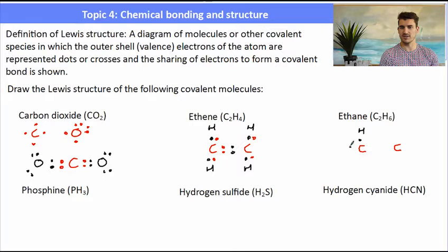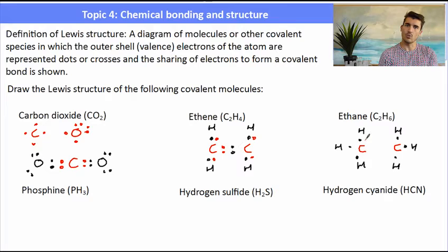Ethane, C2H6, is similar in that the two carbons are connected together, and then there are three hydrogens attached to each carbon. That leaves carbon with one electron to share with its neighbouring carbon, which gives it a single covalent bond.